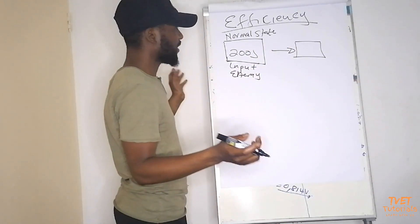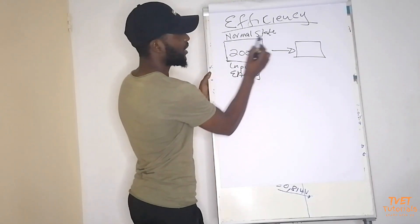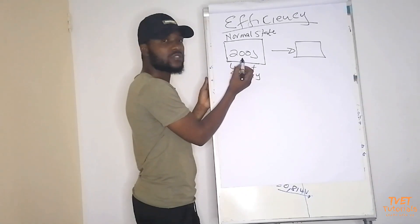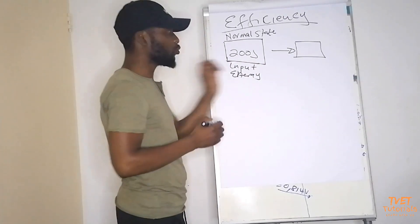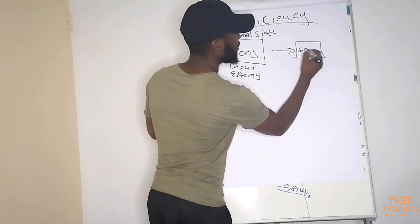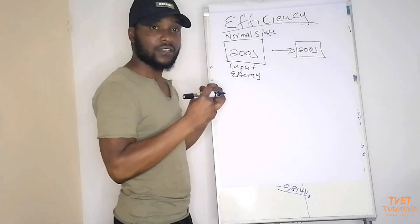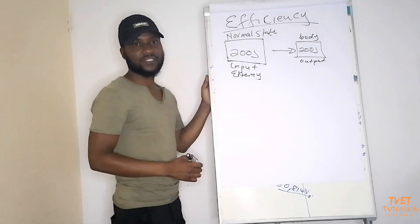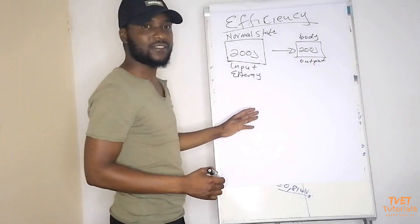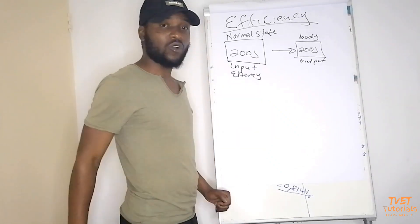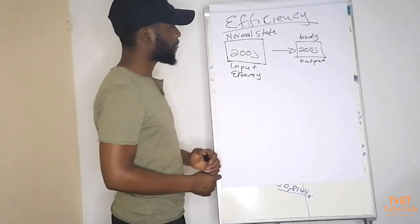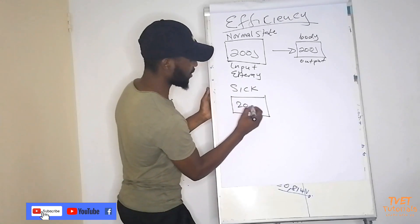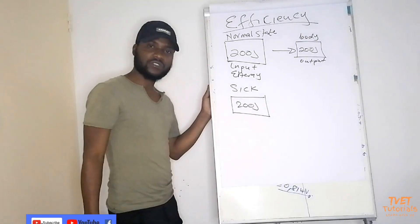For example, if you want to push a body or any object, when you are in your normal state you can produce this amount of energy because you feel strong. You can give it out as output to try and push the object. You can give all 200 joules because you've got strength and no problems.